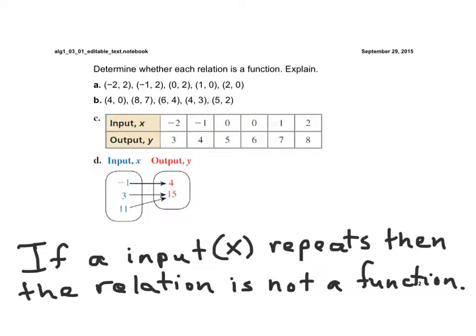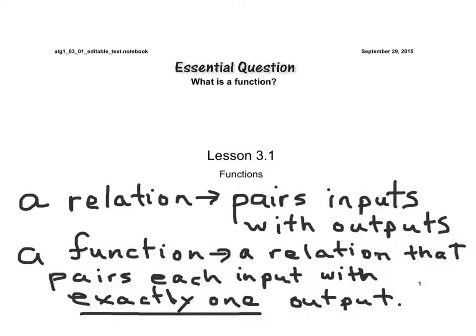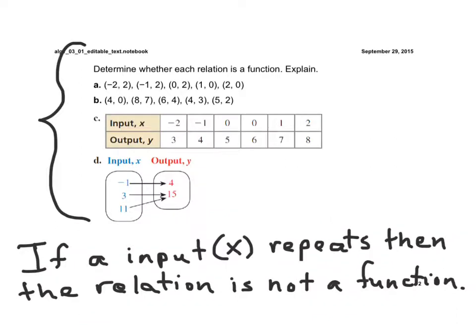So we're first asked to determine whether each relation is a function. First of all, all of these are relations — any pairing of an x to a y or an input to an output. A function is a relation that pairs each input with exactly one output. If we look at letter A, negative 2 goes with 2, negative 1 goes with 2, 0 with 2, 1 with 0, and 2 with 0. None of the x values repeat, so each input is paired with a different output — this is a function.